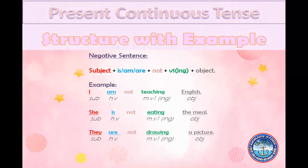Here is the structure of a negative sentence in present continuous tense. The structure is the same, but we add not after the helping verb to show negation. Structure: subject plus helping verb (is/am/are) plus not, plus verb -ing form, plus object. Example: I am not teaching English.